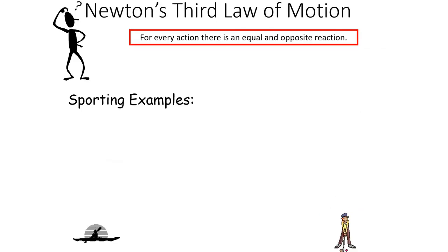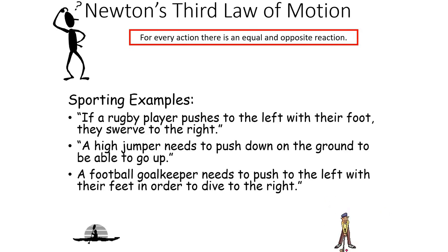So again, can you pause the video and see if you can come up with some of your own sporting examples. Okay, so some of the examples I've come up with. So if a rugby player will push to the left with their foot, then they will swerve to the right. Because remember, it's always opposite. If a high jumper needs to push down on the ground to be able to take off, we have already looked at that sporting example. And then in football, a goalkeeper needs to push to the left with their feet in order to dive to the right to save a shot.